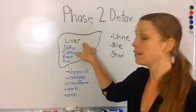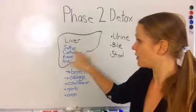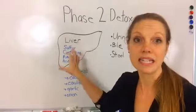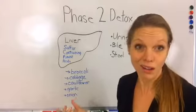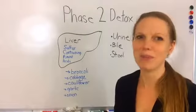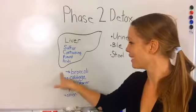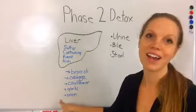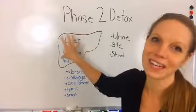But when we talk about phase two of detox, really your liver goes through and does this naturally all the time. It needs sulfur containing amino acids. That's a basic thing. Things like broccoli, cabbage, cauliflower, garlic, onion, these all contain the sulfur containing amino acids.